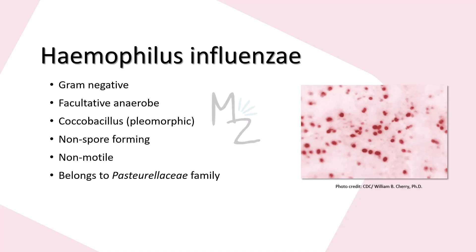Haemophilus influenzae is a small gram-negative, facultative anaerobic bacterium. It is pleomorphic — pleo means many and morph is for shape — which means that this bacterium has got different shapes. That's why it is referred to as coccobacillus. It exists in two different shapes: one is coccus, that is spherical, and the other one is bacillus, that is rod. It is not responsible for forming spores and it is not motile. Haemophilus influenzae belongs to the Pasteurellaceae family.